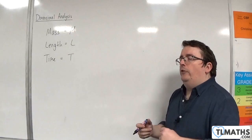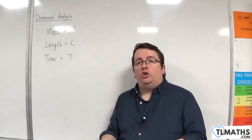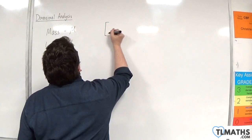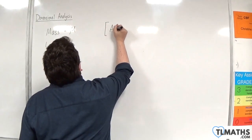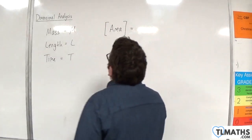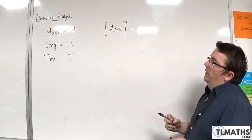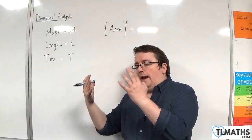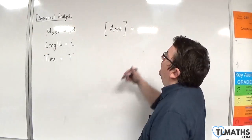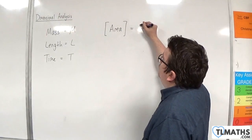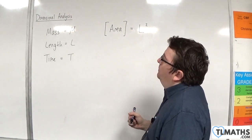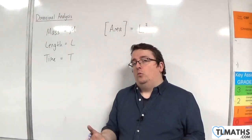When we want to talk about the dimensions of something, so if we wanted to talk about the dimensions of area, then we would put it in square brackets, like so. And we know that area is one length multiplied by another length, so the dimensions of area would be L squared, regardless of the formula you're working with.